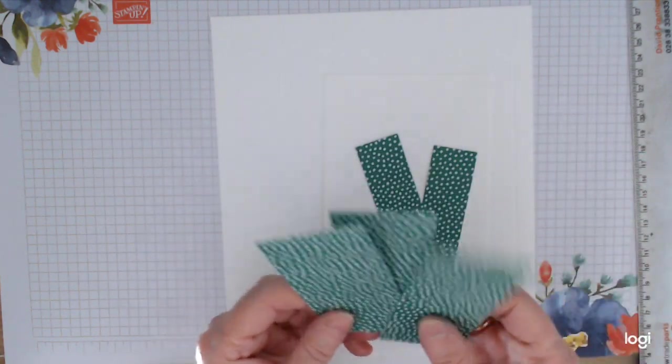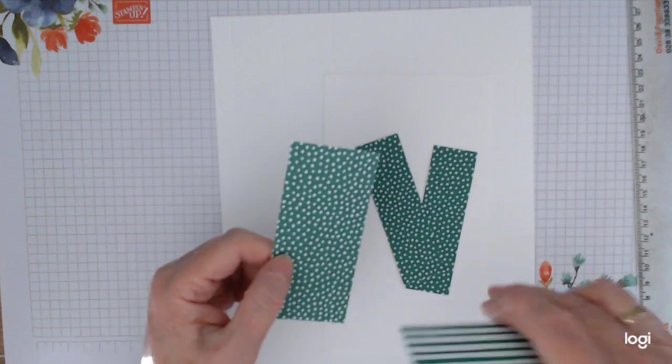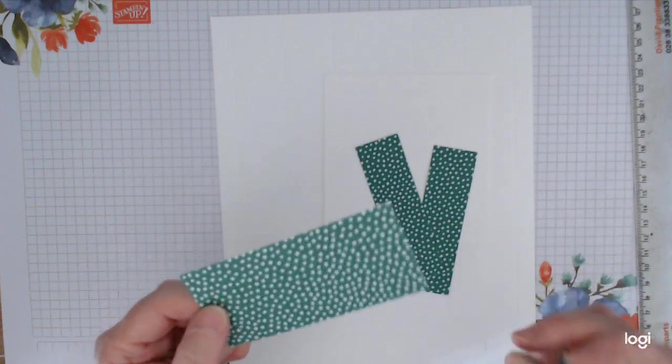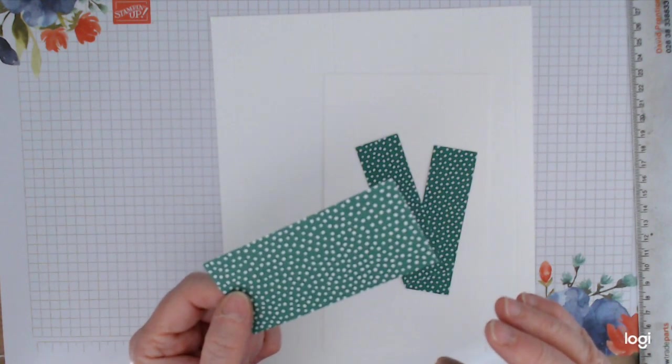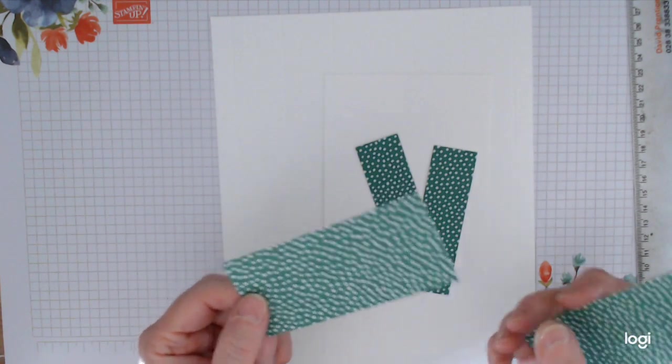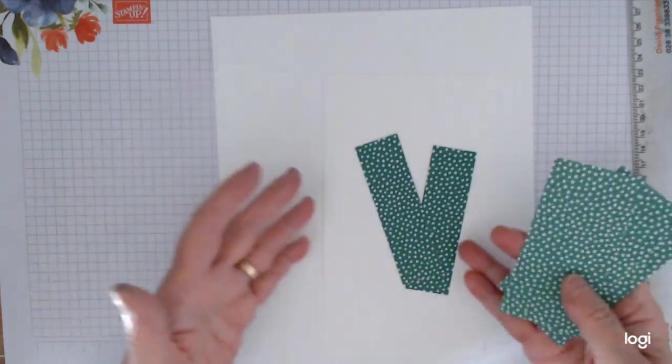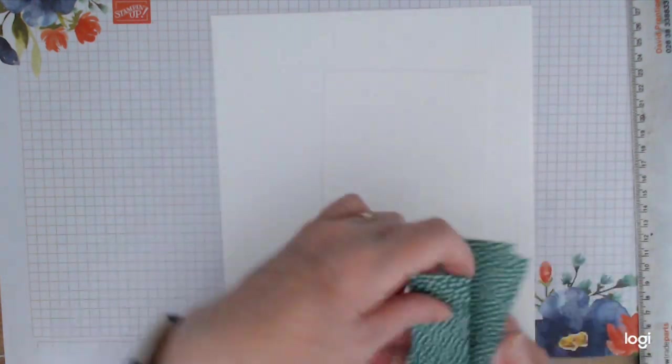You're going to need two small pieces of designer series paper, 3 and 7/8 by 1 and 1/8. You're going to need two larger pieces, 3 and 7/8 by 1 and 6/8. And you're going to need one piece for the base inside your drawer, just short of 4 inches by 1 and 7/8.